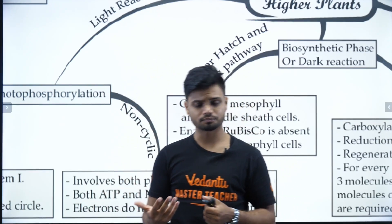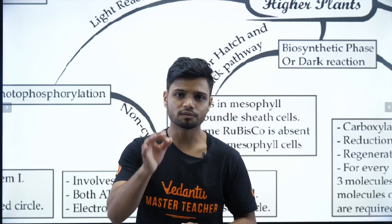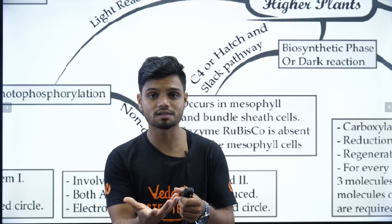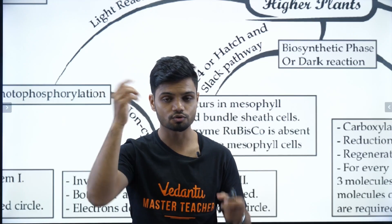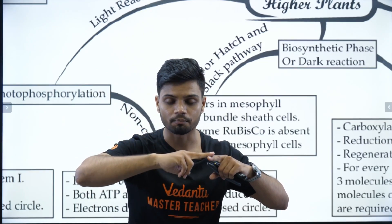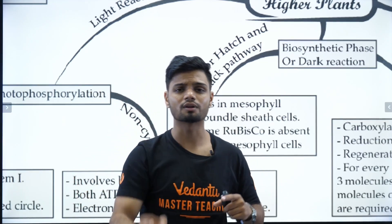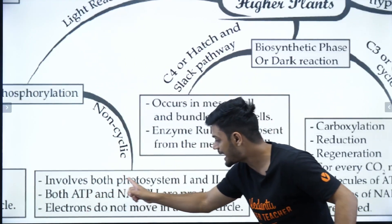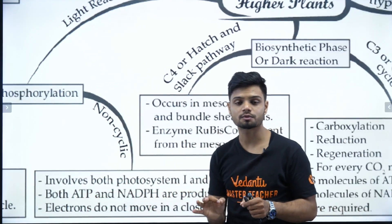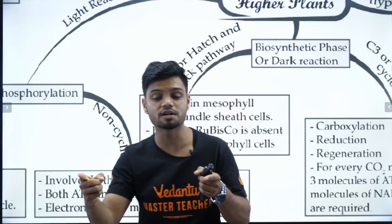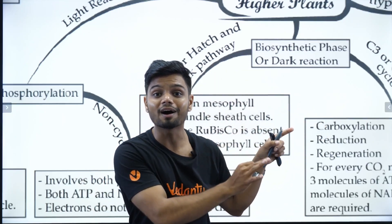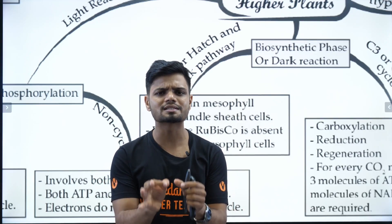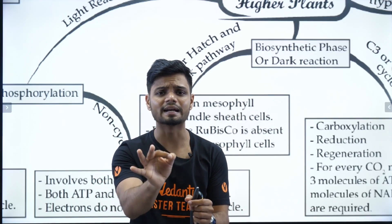And then, what are the products of the non-cyclic reaction? The first product is splitting of water, which involves the evolution of oxygen. So, oxygen is involved, splitting of water. Apart from that, in the non-cyclic reaction, both ATP and NADPH are produced. Now, this ATP and NADPH will be used in the dark reaction later on. Apart from that, this entire non-cyclic reaction is called Z-scheme.